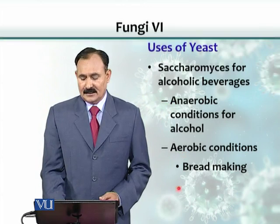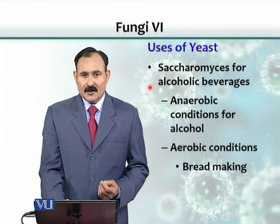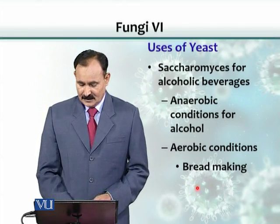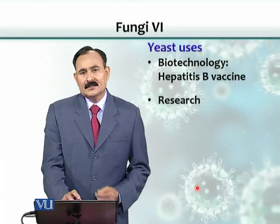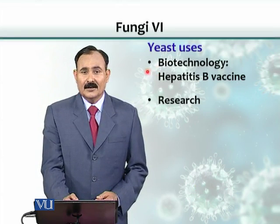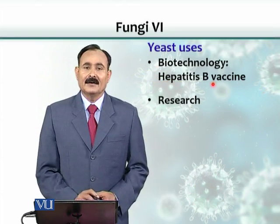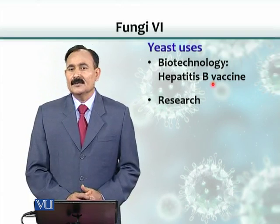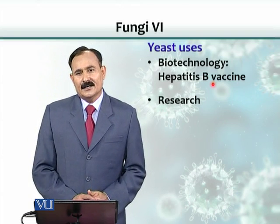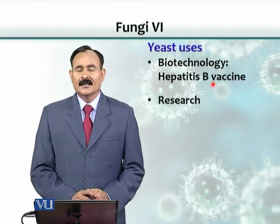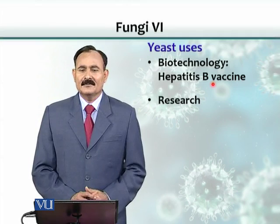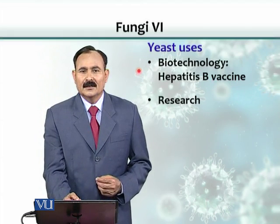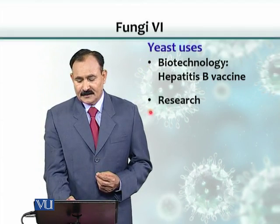Saccharomyces cerevisiae, or various species of it, can produce alcohol anaerobically. Aerobically, the same yeast, if cultured in the presence of oxygen, produces the dough that we make bread from. The same yeast, Saccharomyces, is used in biotechnology for the production of various vaccines — hepatitis B vaccine is just one example. Yeast is a eukaryotic cell, so proteins expressed by it have the same three-dimensional conformation needed in the body, making it a tool for both production and lab research.